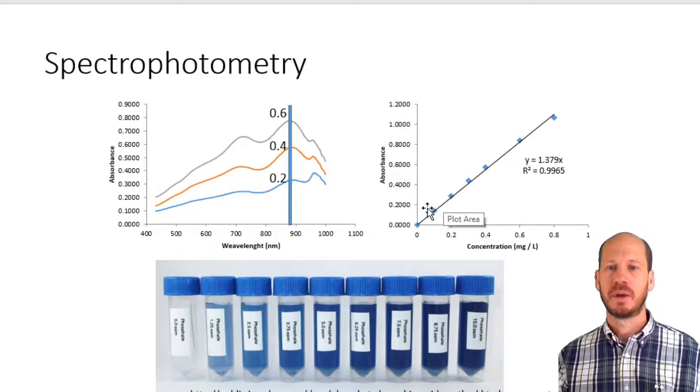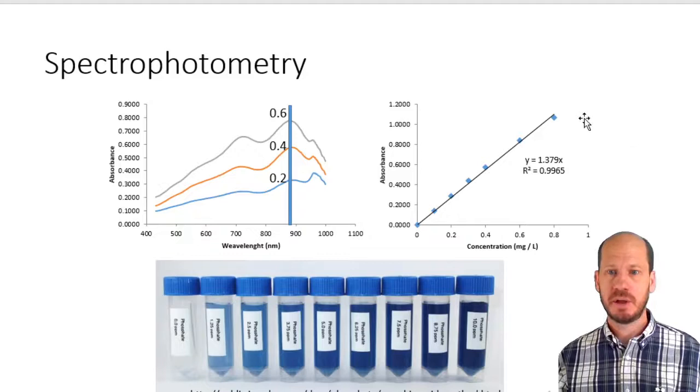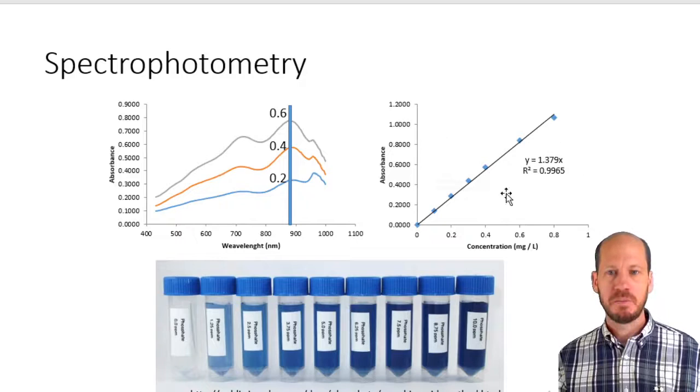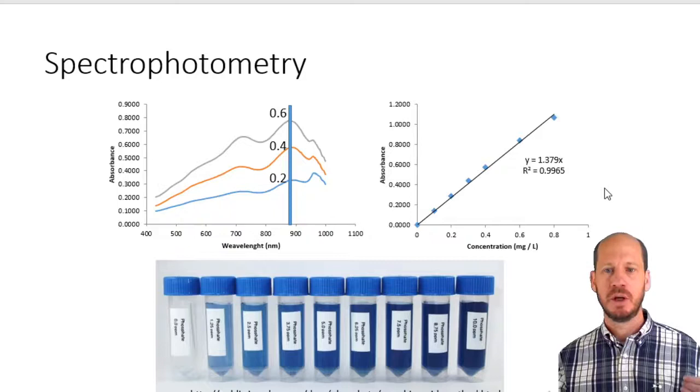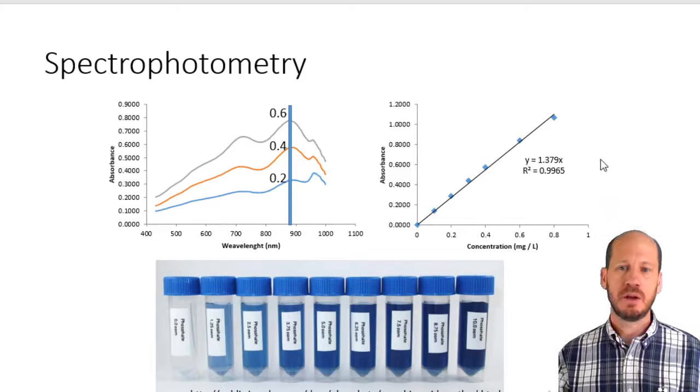It's important to say that this method is a continuous color development. If you wait more, you will have more color. If you read it quick, it will have less color. You need to use the curve which is measured at the same time as your samples. You add the color development solution to your samples and the curve at the same time, and measure both at the same time. What you do today is not valid for measurements tomorrow.